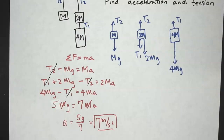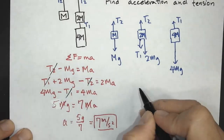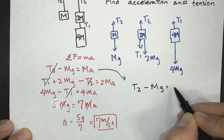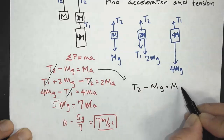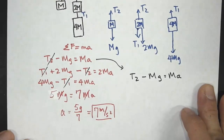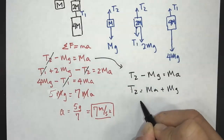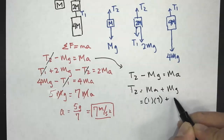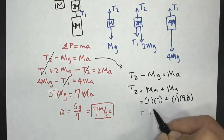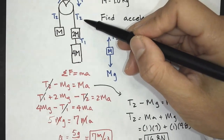Next we want to find the tension. We'll plug the acceleration back into our first equation. Using T2 minus Mg equals Ma, with M = 1 kilogram given, T2 equals Ma plus Mg. Plugging in numbers: M is 1, A is 7, M is 1, g is 9.8, giving us T2 = 1(7) + 1(9.8) = 16.8 newtons. That is the tension force in our pulley.